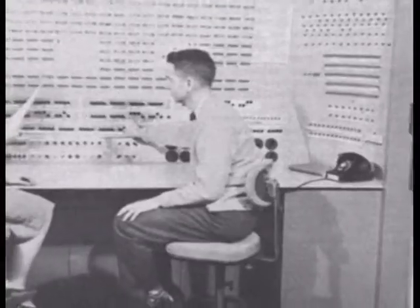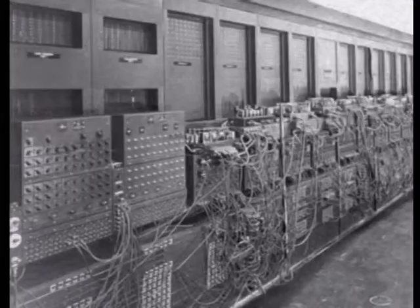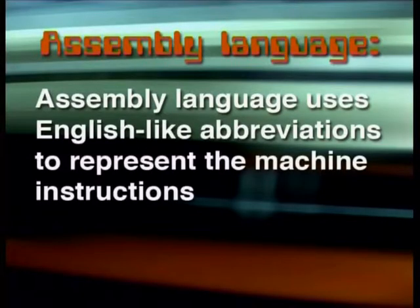But how come the computers we are using today understand each other? Because things have changed over the years. The early computer programmers had to actually load the bit patterns of zeros and ones into the computer's memory and then press the switch for the computer to start executing the program. That must have been hectic and very boring — I would have made loads of mistakes. Fortunately, the programmers back then discovered that they could use their computers to help with the programming process. They gave each instruction or command in machine language an English-like abbreviation to represent the actual bit pattern.